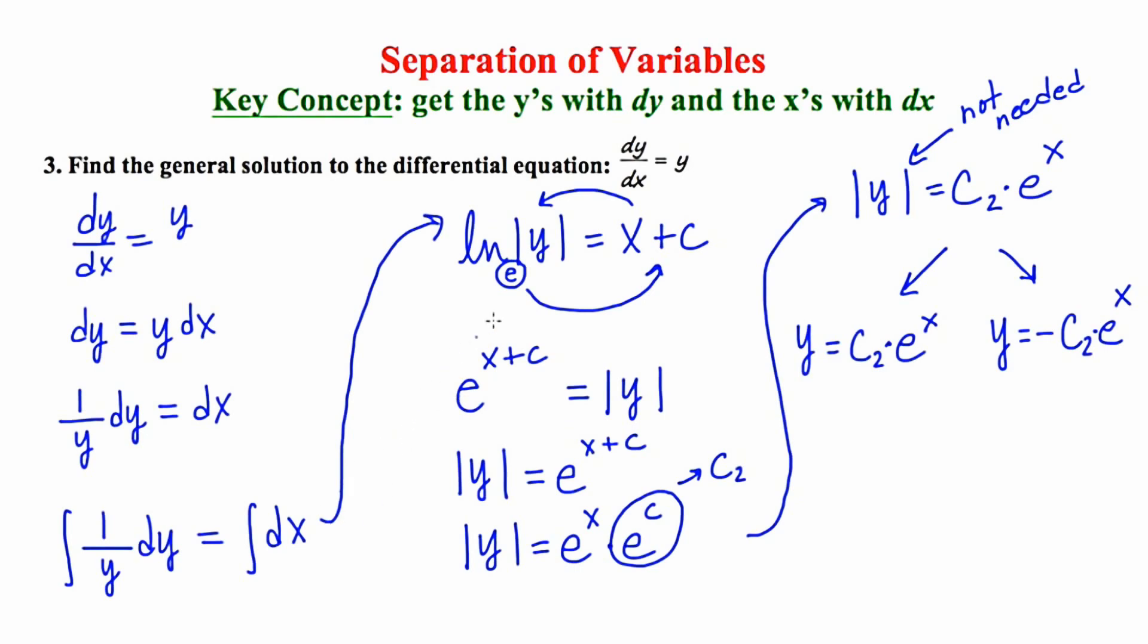And that can go back all the way to this step right here. And I'll highlight this in red. When we get to this point for future problems, we're not going to use absolute value because it's not going to be needed. So our final answer for this one is just y is equal to c sub two times e to the x.